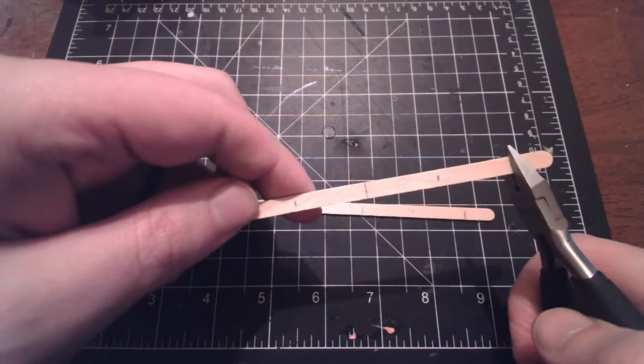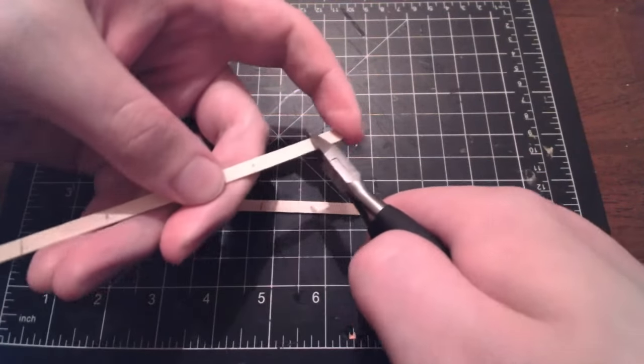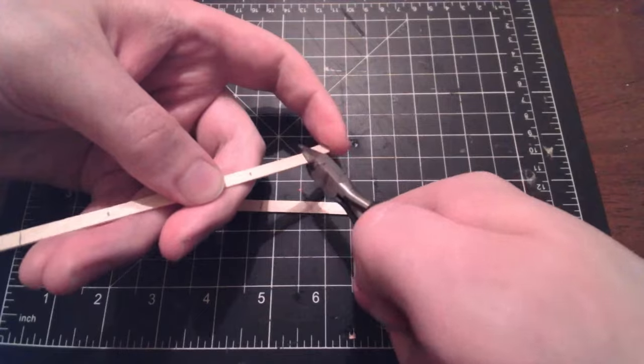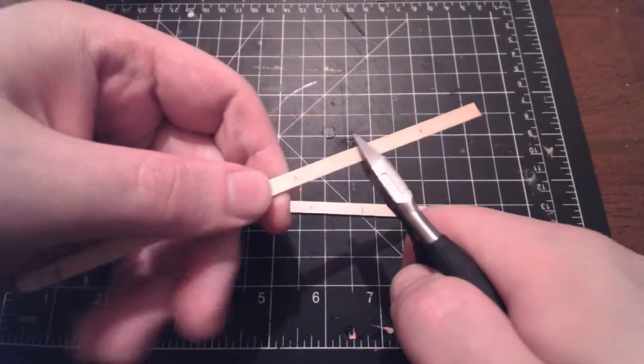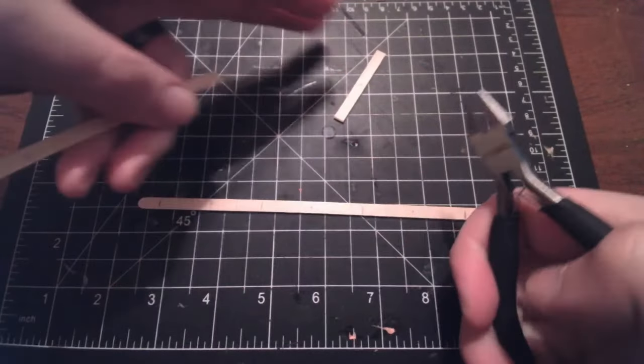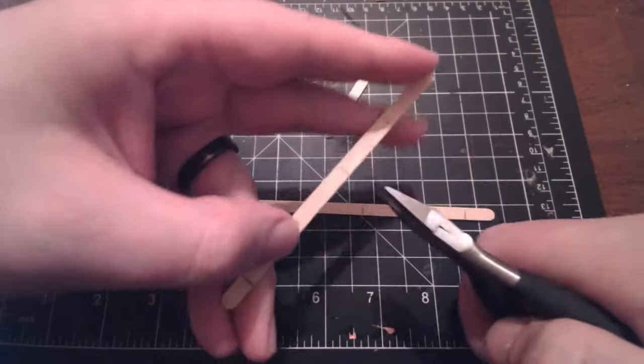Now we're going to cut these apart. So be careful. These will go flying with nippers. But cut on your two inch marks, your solid lines in my case, until you have six two inch long pieces.